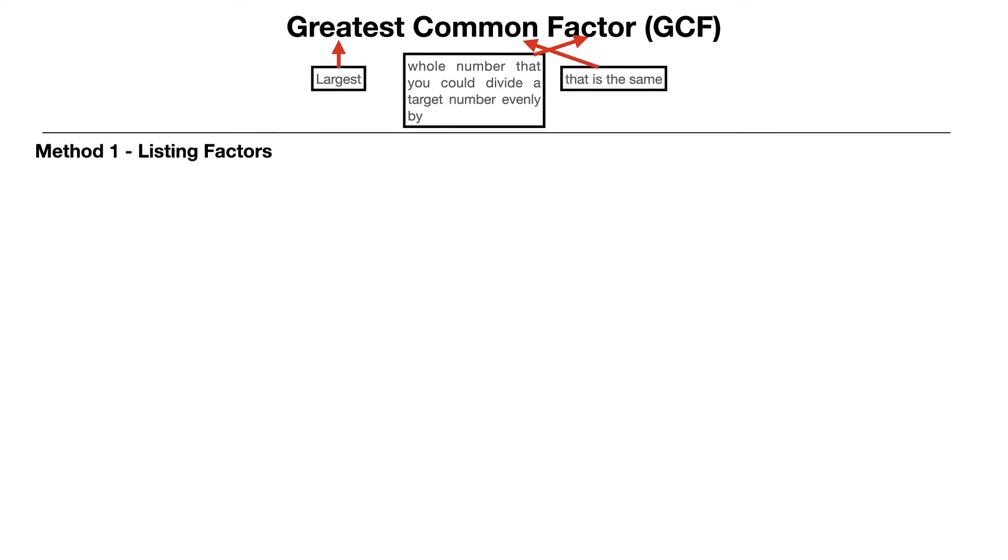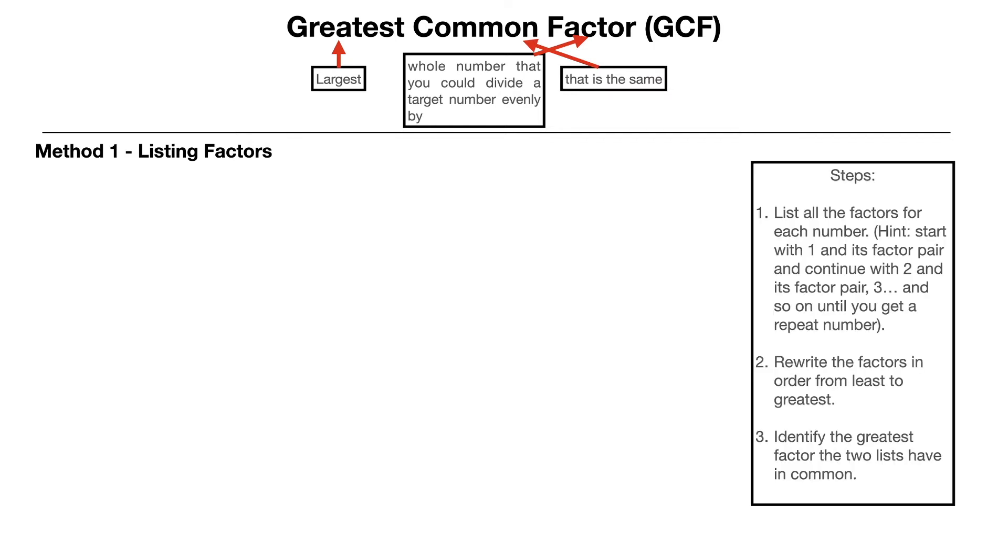So our first method is going to be using listing factors. And we've got a set of steps over here that we're going to be using to do that. So let's say you had the numbers 18 and 24, and you were asked what is the greatest common factor? That's the largest number that is a factor of both of those. Now, if you know your times tables really well, it's going to be a little bit easier for you.